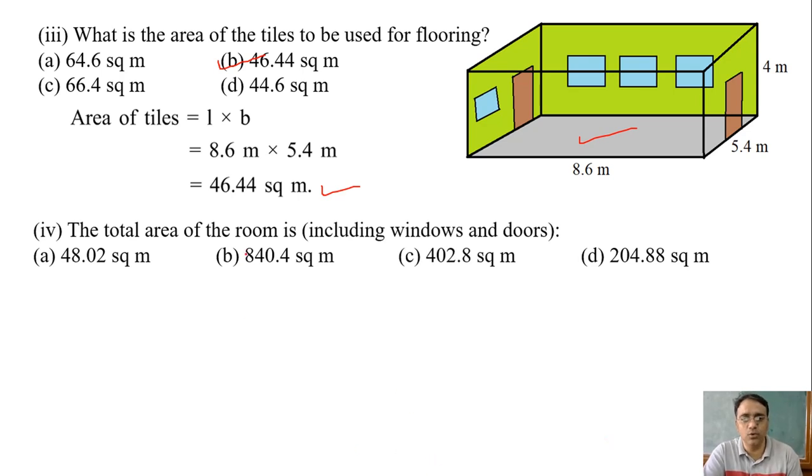The total area of the room is including windows and doors. What is the total area of the room? What is the total surface area of the room formula? Area of cuboid? Total surface area of cuboid. What is the total surface area of cuboid? 2 into (lb + bh + lh). Okay.